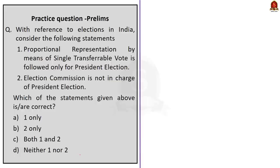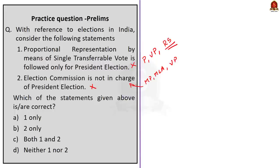The second question is also a two-statement question. Statement one says: proportional representation by means of single transferable vote is followed only for the presidential election. This statement is incorrect because the proportional representation with single transferable vote system is adopted for the election of the president, the election of the vice president, and the election of members to the Rajya Sabha. Statement two says: the Election Commission is not in charge of the presidential election. This is also incorrect — the Election Commission is responsible for the presidential election as well as elections to parliament, state legislatures, and the office of the vice president. So the correct answer is option D, neither one nor two.